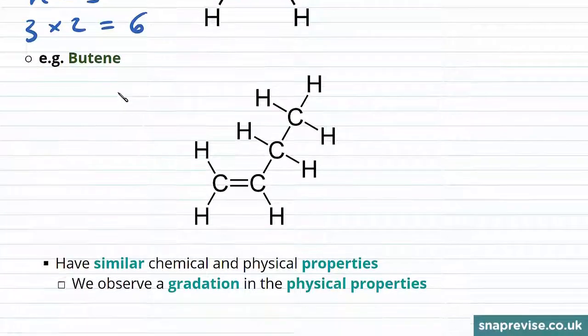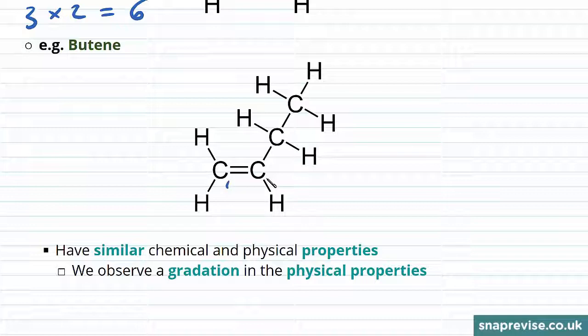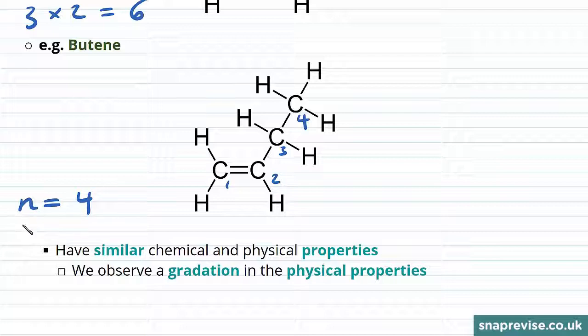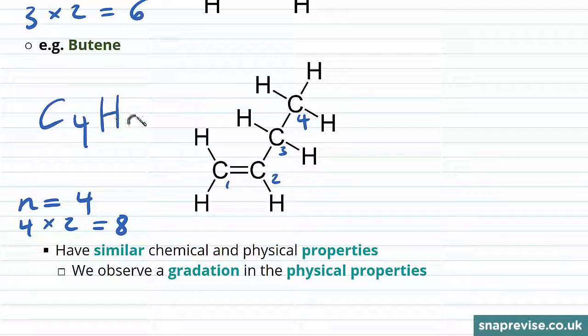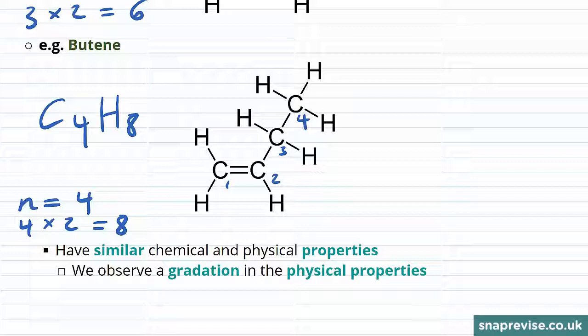Looking at a molecule of butene, we can see we have one, two, three, four carbon atoms. So n is equal to four and therefore four times two, we will have eight hydrogen atoms. So we have a formula of C4H8, and again we can locate that double carbon to carbon bond that exists over here.